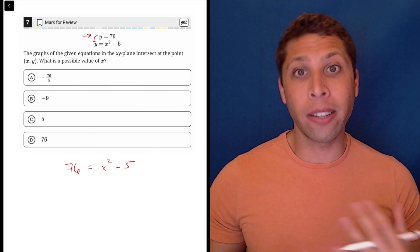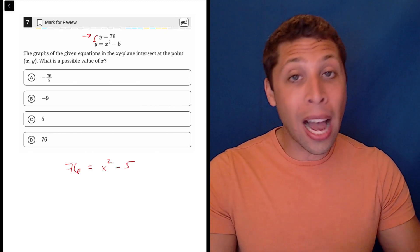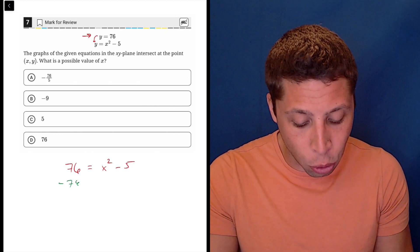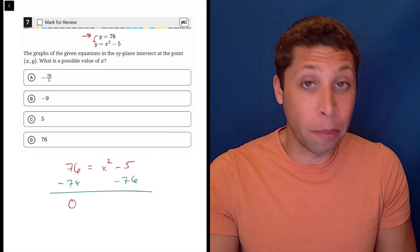But as soon as we have an X squared, things are a little bit different. So your real habit is when you have an X squared, do the opposite of what you normally do. Bring everything towards the X so that you get an equation that's going to look like a quadratic.